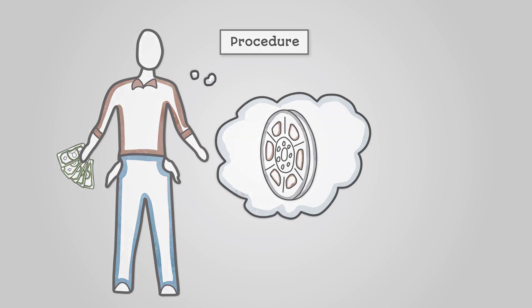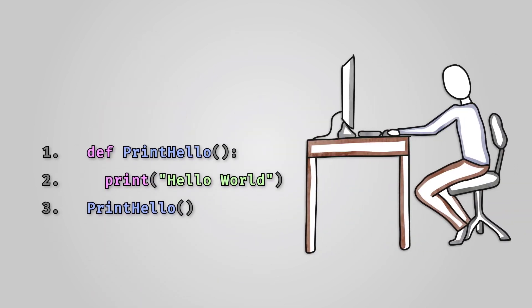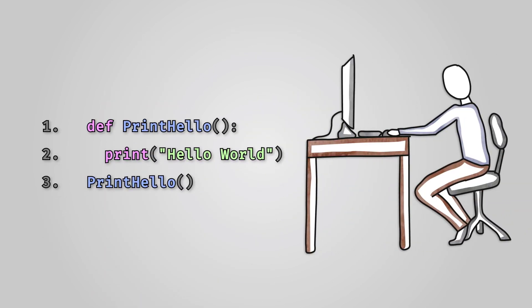Let's create a simple procedure to print out hello world. Let's look through this Python code line by line. We first create our procedure. All procedures need to have a name. We've called this one print hello. The word def is short for definition.